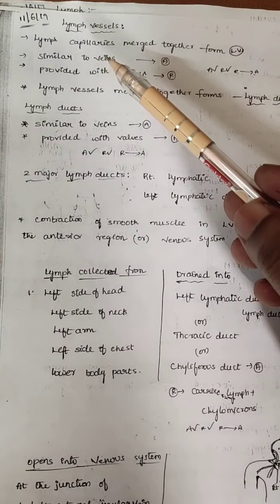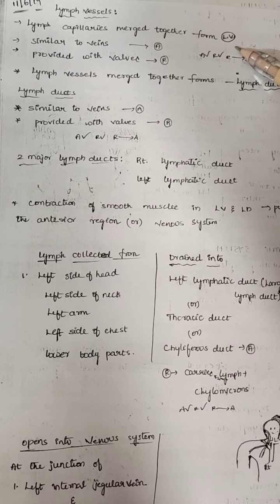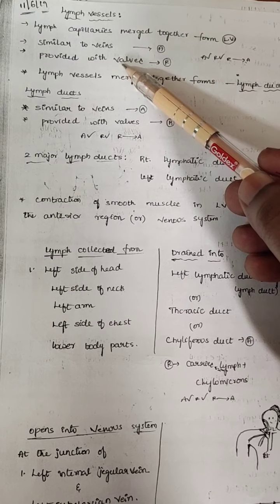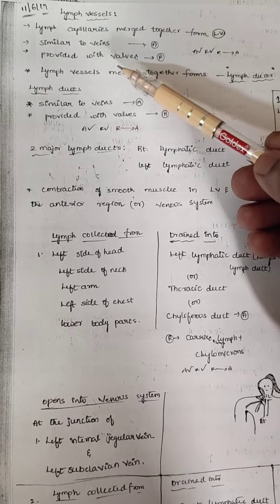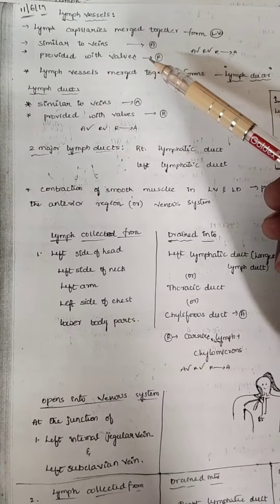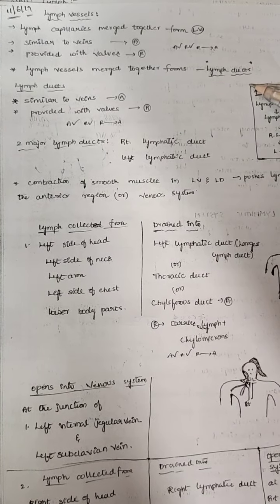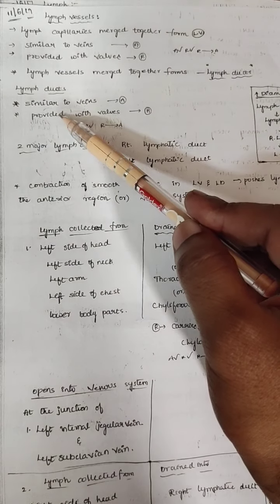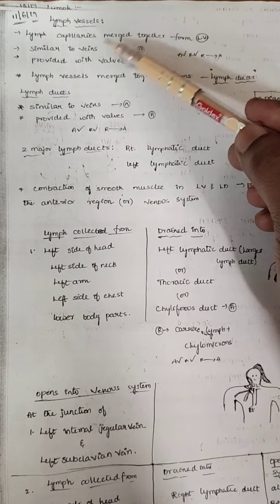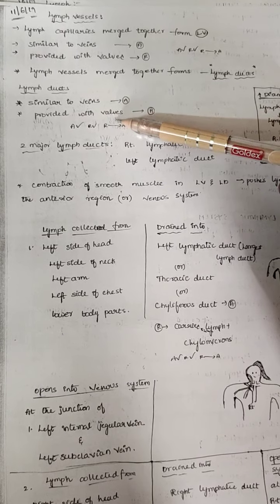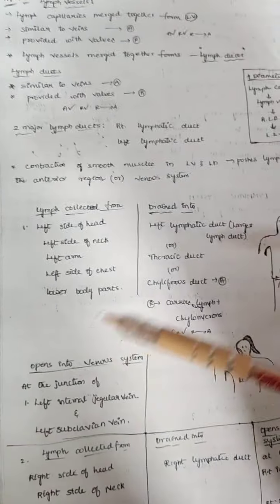The lymph capillaries all merge together to form lymph vessels. Lymph vessels are similar to veins and are provided with walls. All the lymph vessels merge together to form a lymphatic duct. The lymphatic duct is also similar to veins and also provided with walls. Both lymph vessels and lymphatic duct have walls same as that of veins.